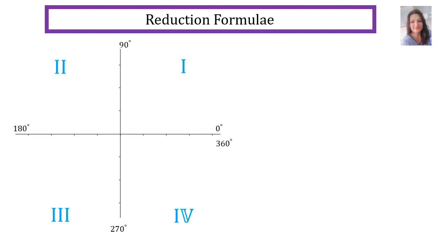The next thing I want to explain is the reduction formula. First, it's important to realize what the CAST rule is. C stands for cos, which is positive in the fourth quadrant. A means all functions are positive in the first quadrant. S means sin is positive in the second quadrant. And T means tan is positive in the third quadrant.